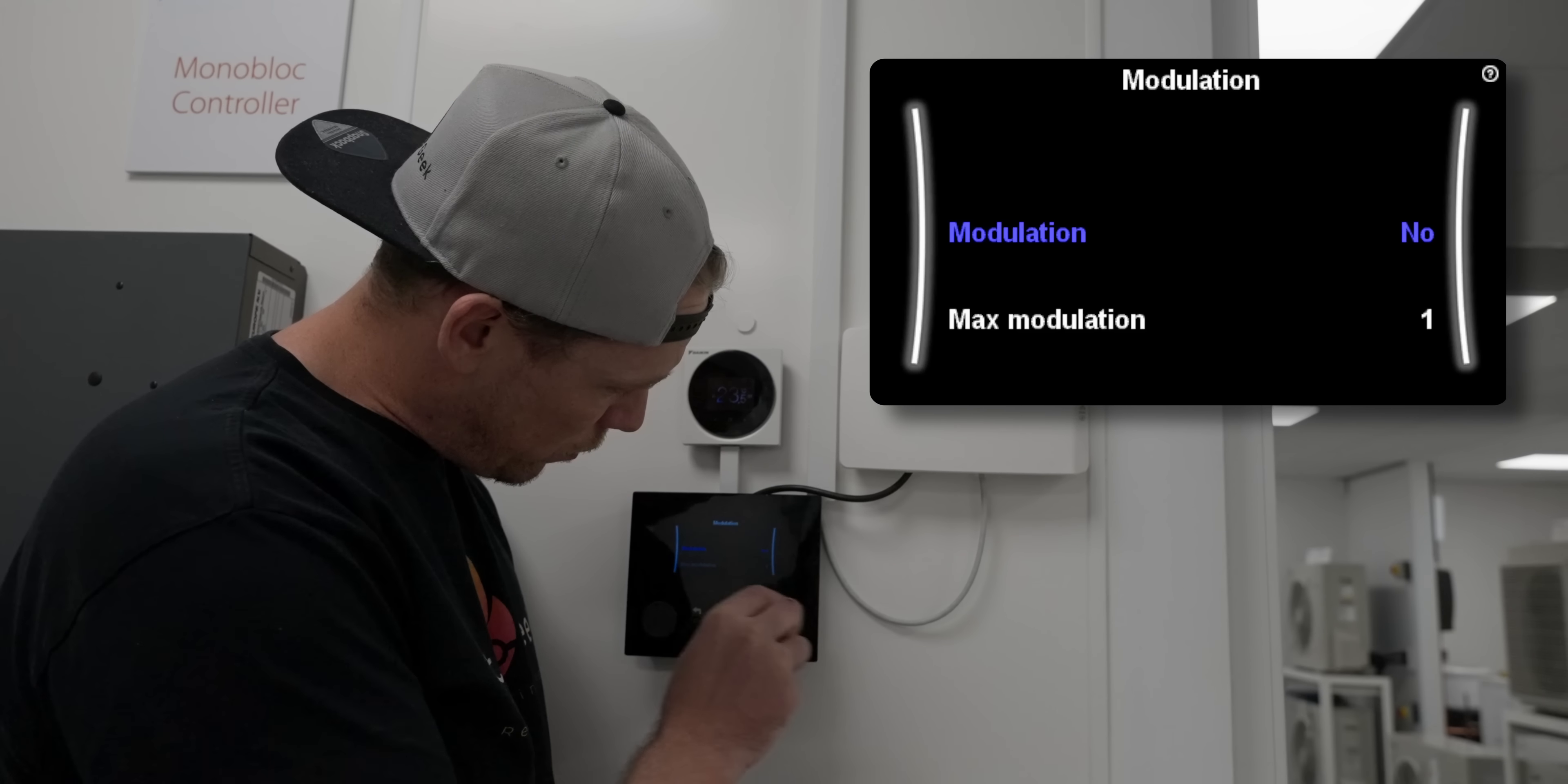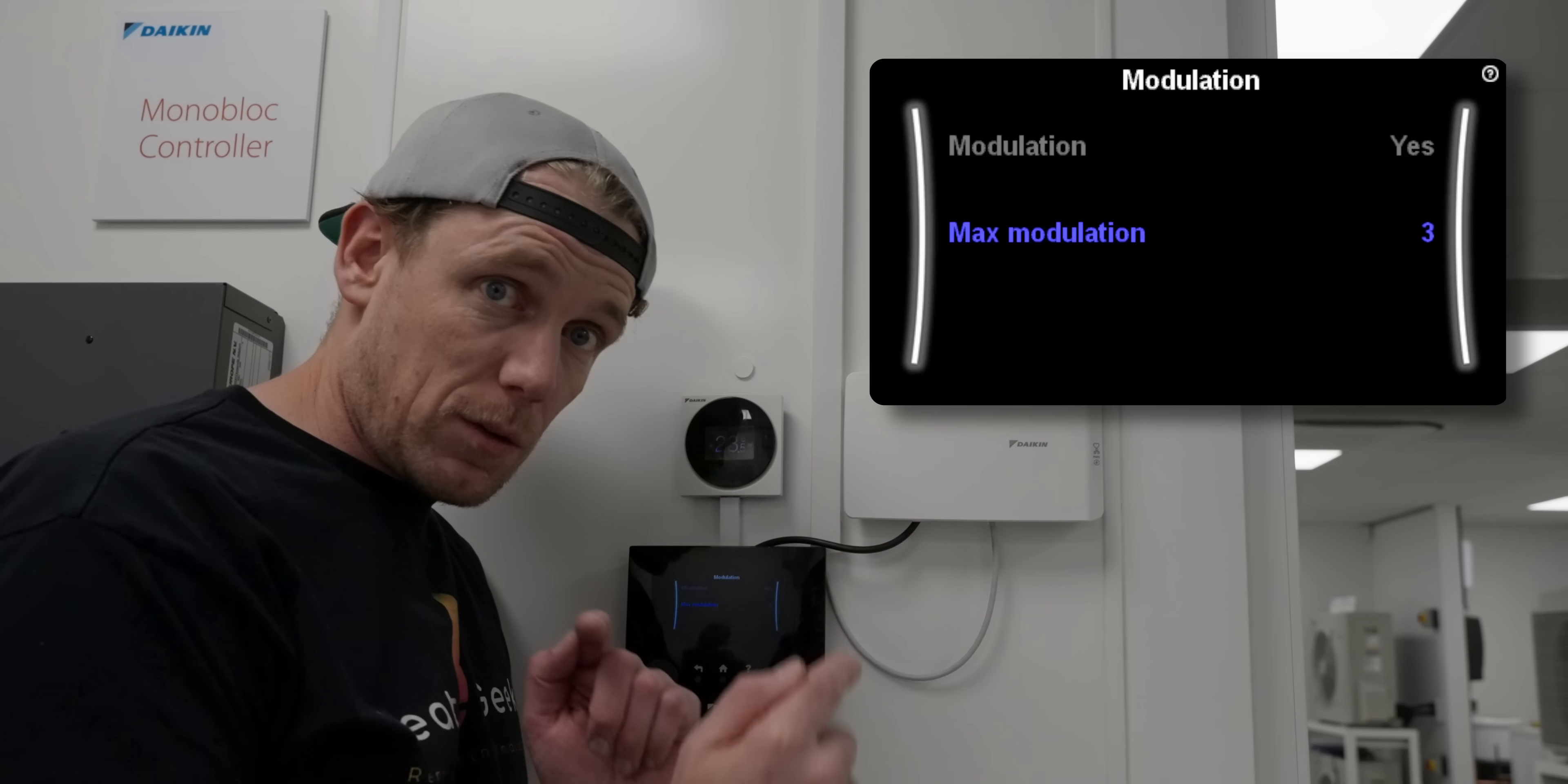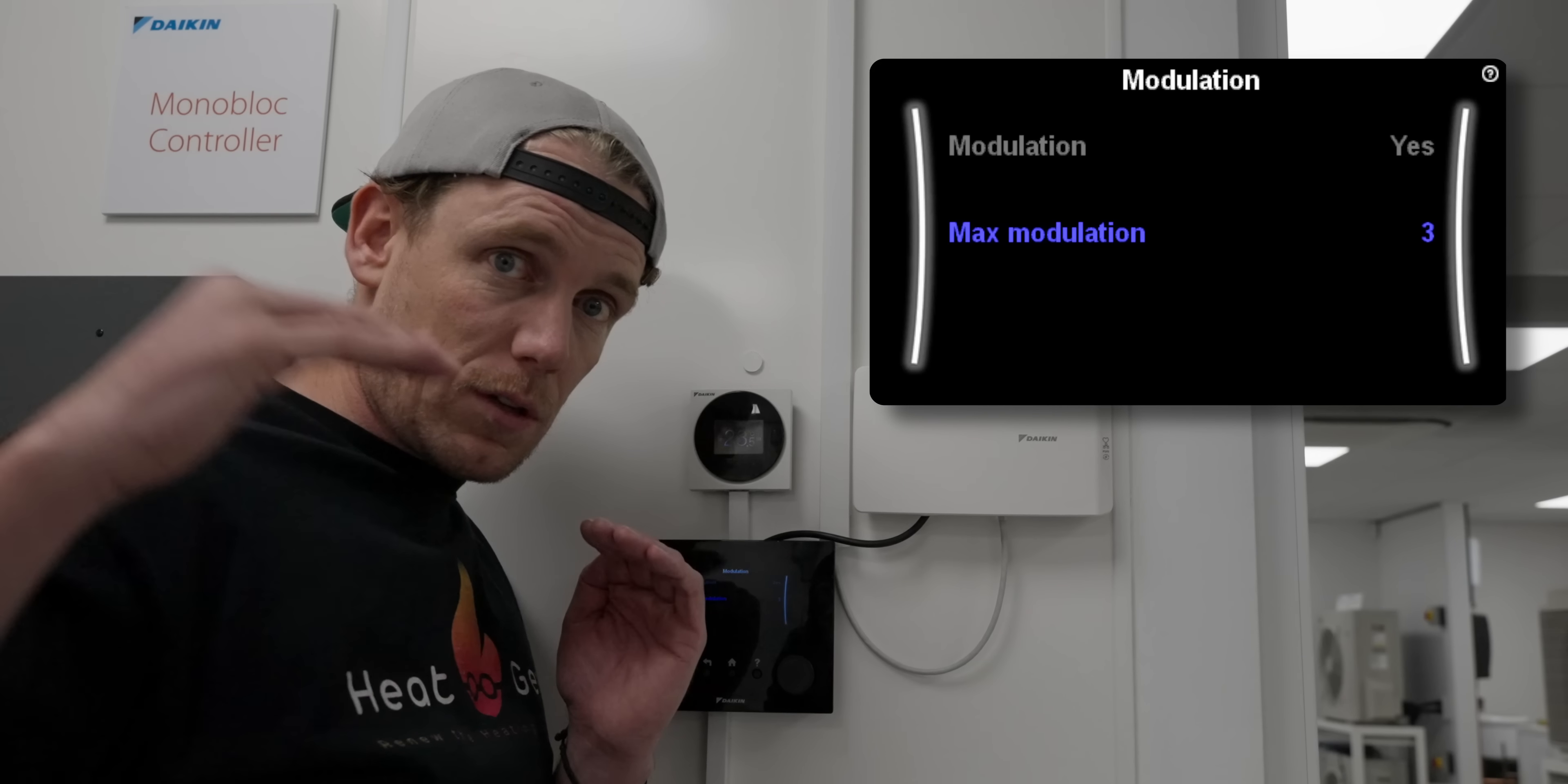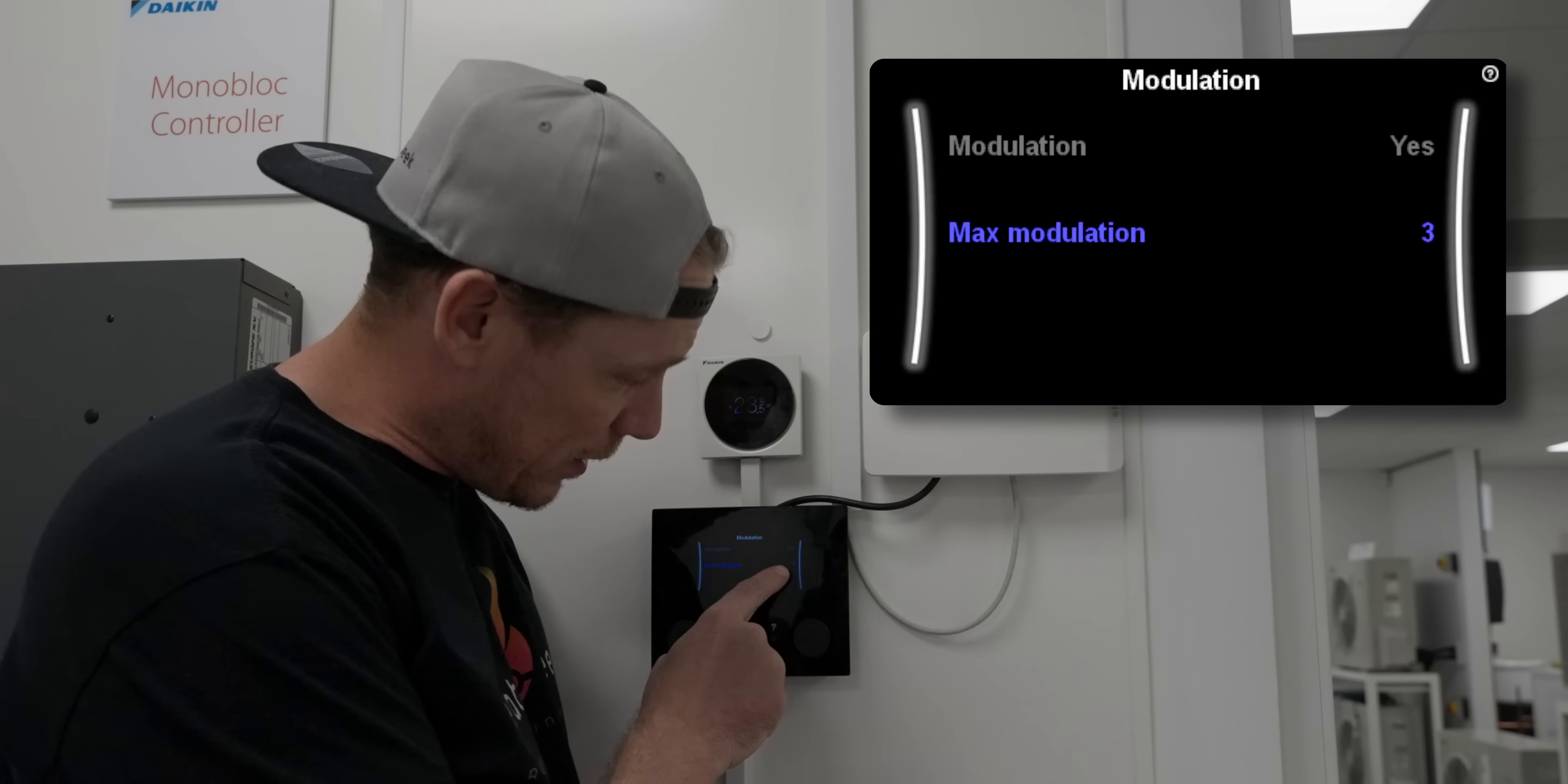We can change the no to a yes. Now we can turn this dial and rather than once we've got the weather compensation perfect, pulling in the external third party thermostats down to act like a brake, instead we can rely on this to shift the flow temperature off the weather compensation curve by different amounts of degrees in order to refine the correct flow temperature for the house to get a perfect room temperature.